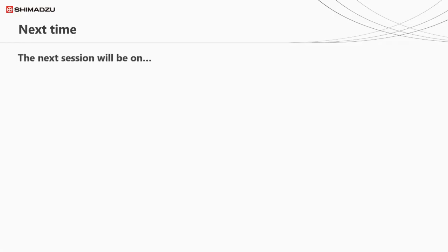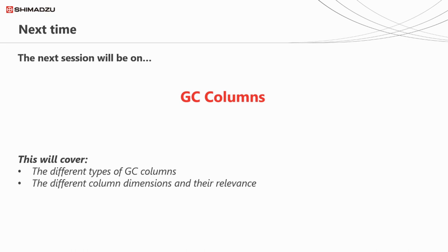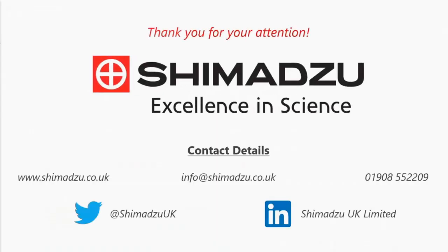If you found this session interesting or informative, please do join us next time. Part two of the course will be on GC column chemistry. We'll be looking at the different types of GC columns, the different column dimensions and their relevance, column phase and polarity, and the temperature ranges that various columns work at. You can find us on all the usual social media platforms. Please feel free to contact us should you wish to find out more. Thank you very much and enjoy the rest of your day.